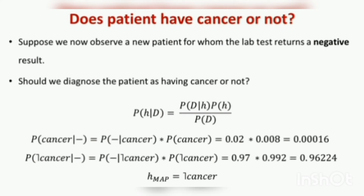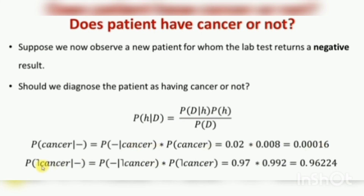Does the patient have cancer or not? Suppose we now observe a new patient for which the lab test returns a negative result — should we diagnose the patient as having cancer or not? P of H given D equals P of D given H times P of H divided by P of D. This is the posterior probability. The probability of cancer given a negative report equals 0.02 times 0.008, which equals 0.00016.